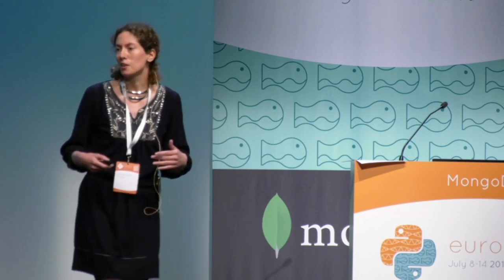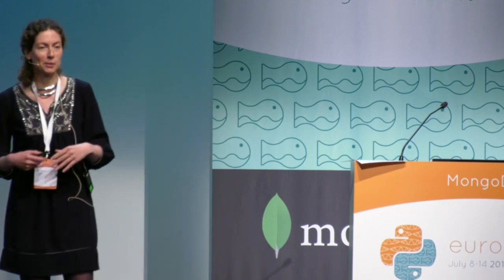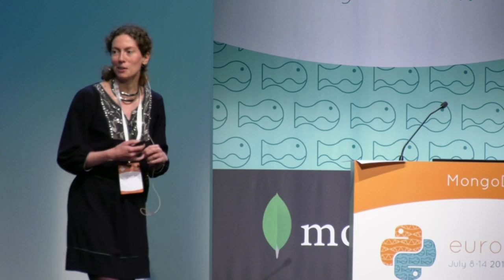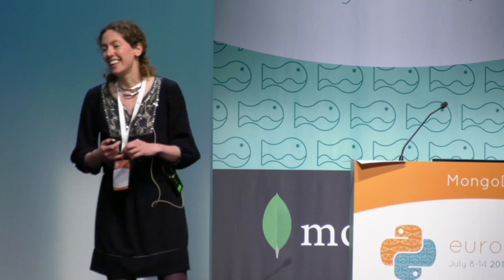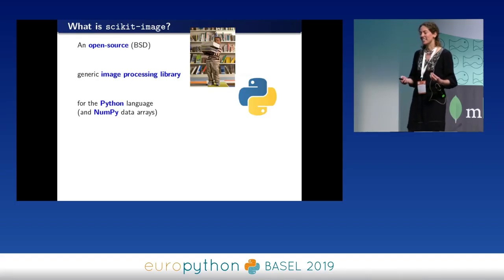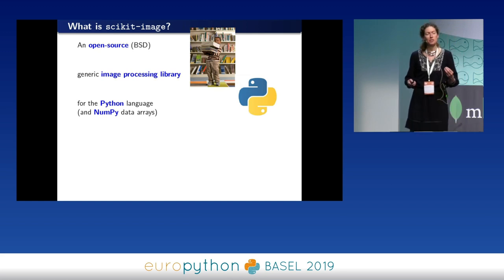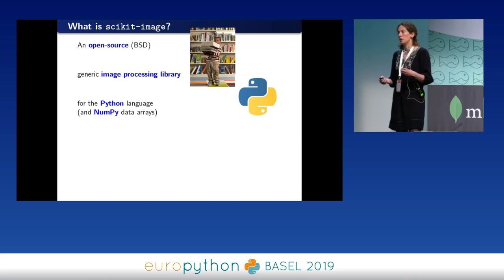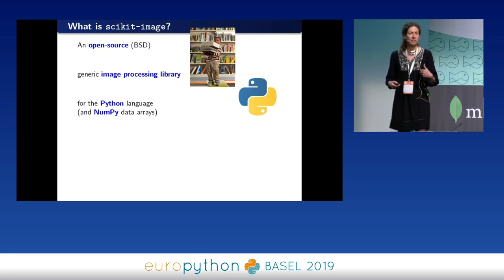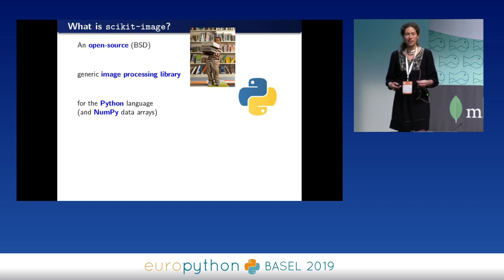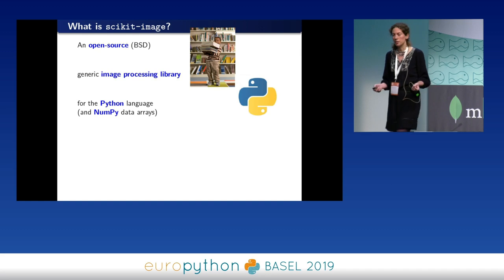Please come and talk to me after the talk to tell me about all your bugs with scikit-image — I will love that. Scikit-image is a generic image processing library. When I say generic, it's not for one application in particular, but its mission is more to process scientific images rather than, for example, Instagram filters. It's really more for scientific needs.